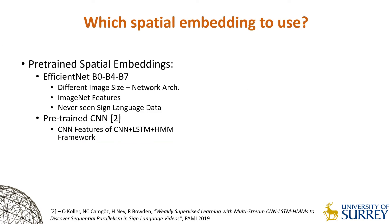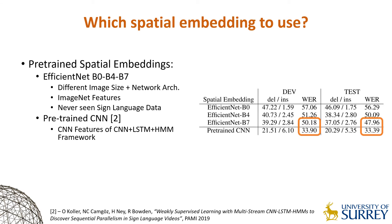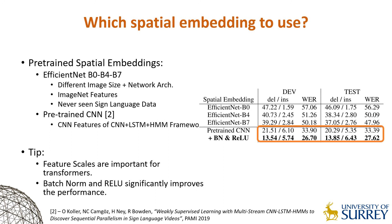We first look into the spatial embedding layers and conduct several experiments in the sign-to-gloss setup. We use ImageNet features from three variants of EfficientNets and CNN features from a state-of-the-art CSLR model. In comparison to EfficientNets, CSLR features achieve better recognition accuracy, thus displaying the importance of pre-training. We also discovered that the transformer networks are sensitive to their input scale. We utilize BatchNorm to scale features down and a ReLU to add more non-linearity, which significantly improved our recognition performance.